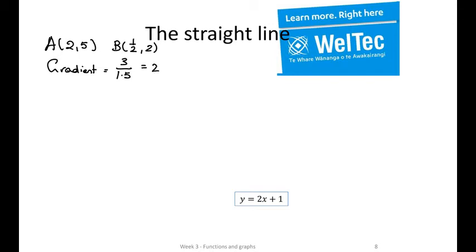It doesn't matter whether you go the other way, because both the signs then will be negative, and it's going to be negative over negative, which is still positive. We can work out, if we had the picture of a line that's going to go through (1/2, 2) and (2, 5), like that.